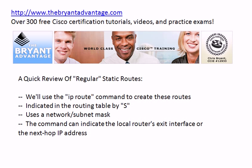You're always going to use the IP route command to create a static route, whether it be a regular basic static route, a default static, or floating static. A basic static route is indicated by the letter S and the letter S only in the routing table, and you're going to use a network or subnet mask — not a wildcard mask as you would in an access control list. The IP route command can indicate either the local router's exit interface or the next hop IP address.